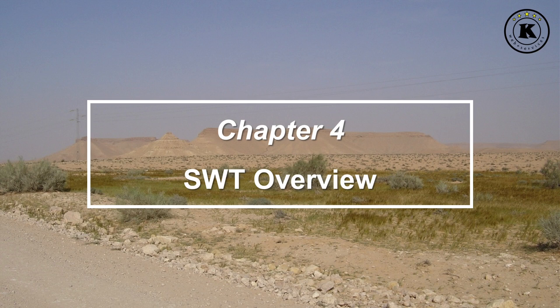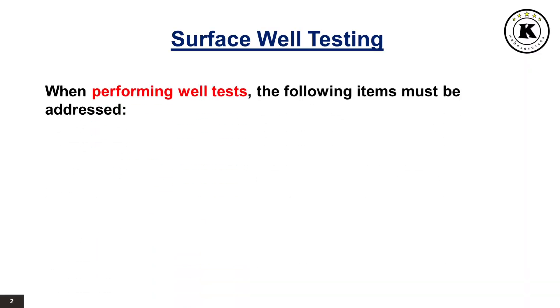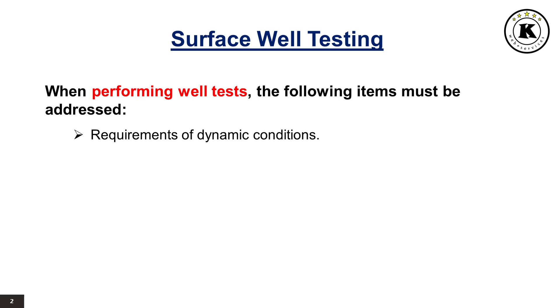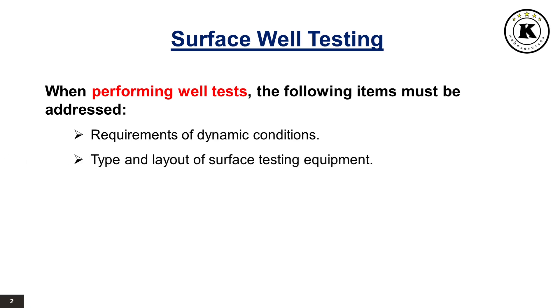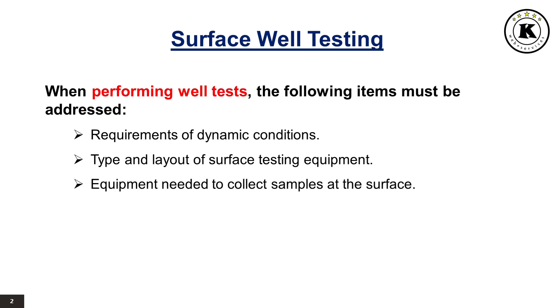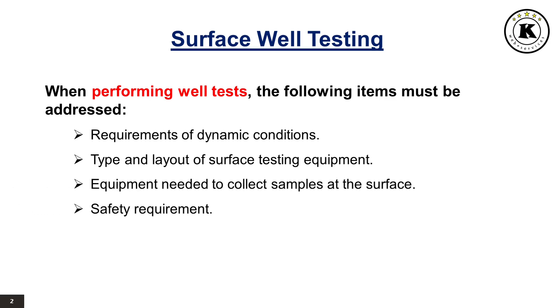Chapter 4: Surface Well Testing Overview. When performing well tests, the following items must be addressed: requirements of dynamic conditions, type and layout of surface testing equipment, equipment needed to collect samples at the surface, and safety requirements.